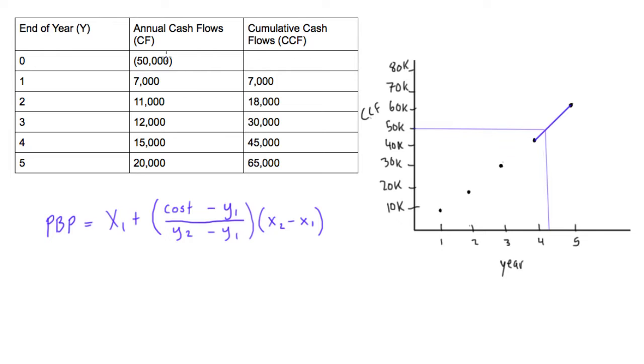And we want to figure out how long it's going to take to make back this $50,000. So obviously at the end of year 4, we've made back $45,000, and then at the end of year 5, we've made back more than our $50,000. So we know that our project is going to be somewhere between 4 and 5 years.